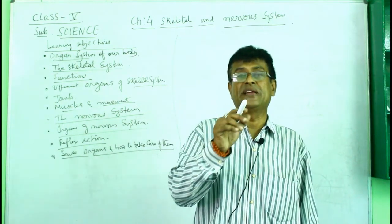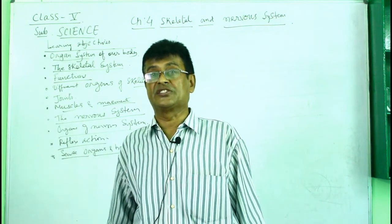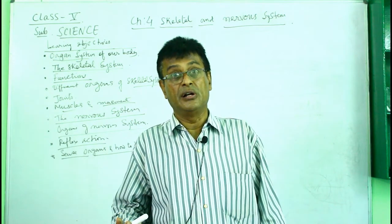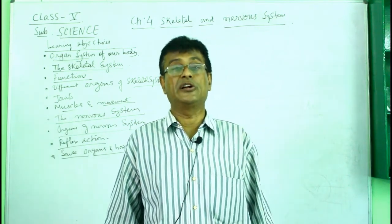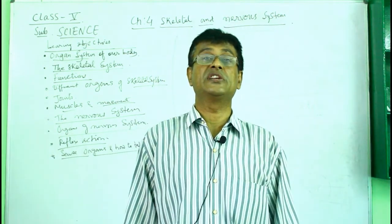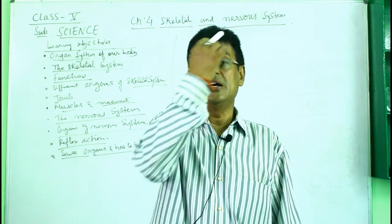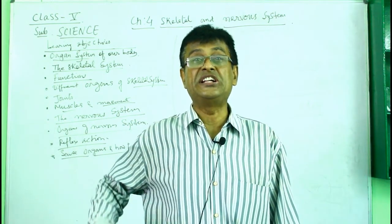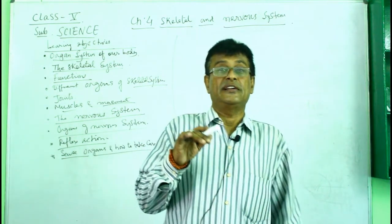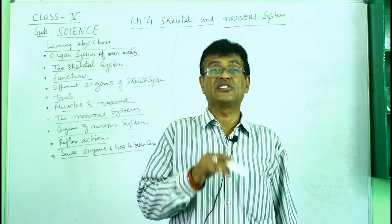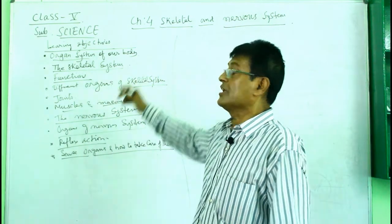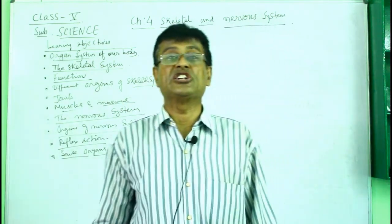In human beings, there are two kinds of skeletal systems. The first skeletal system is the external integument which is known as the skin - that is known as the external skeletal system. The internal skeletal system, or real skeletal system, is nothing but the combination of some bones.